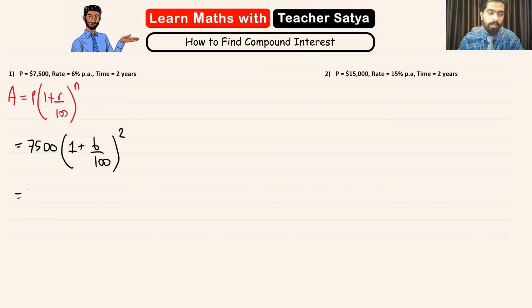So, we have 7500 multiplied by, now I would advise you not to simplify the fraction here as afterwards, after we break the bracket, the 100 can simplify with the principle. So, when you find the lowest common multiple and add the fraction, we will have 106 over 100 to the power of 2.